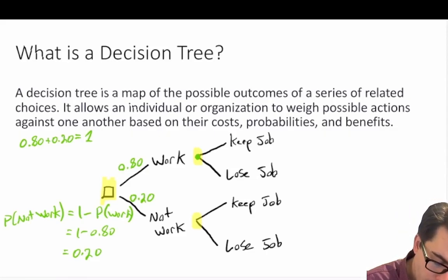So let's just say if you go to work, the probability that you keep your job is 90 percent. Well that means that the probability that you lose your job is equal to 1 minus the probability that you keep your job, which is equal to 0.1. Again, the probabilities must add up to 1.